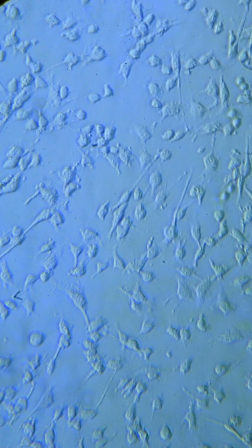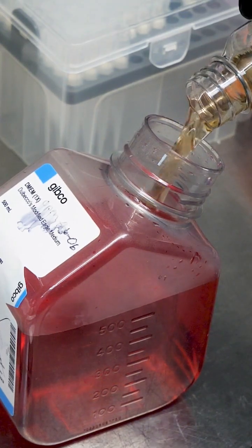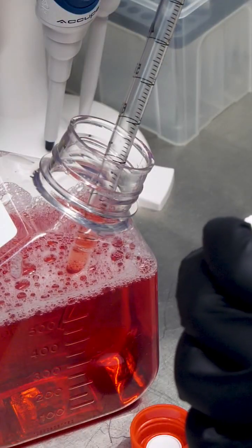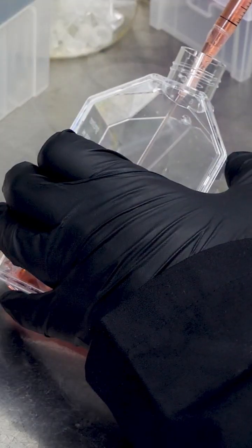We start by mixing up a special growth media called DMEM, supplemented with a few different ingredients to help the cells grow. Then we set up a tissue culture flask with 15 milliliters of media.